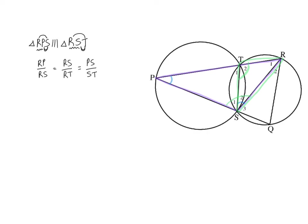So if your order of your letters when you write down your similarity is correct, you can immediately write down the pairs of sides that correspond.